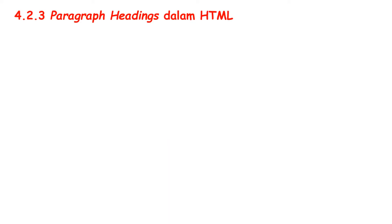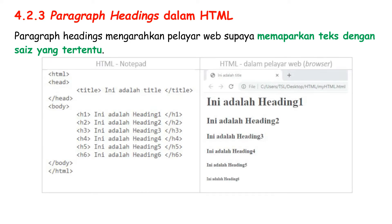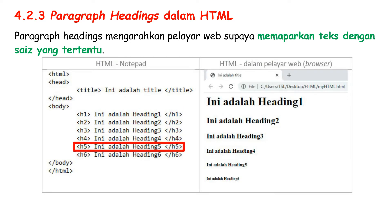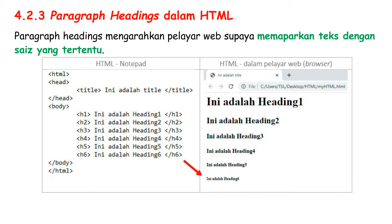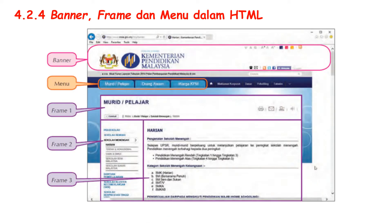Paragraph headings text is used to instruct the web browser to display heading text of a certain size. There are H1 to H6 tags, where H1 is the largest title, followed by H2, H3, H4, H5 and lastly H6. For Laman Sesawang, there are also Sepandok web, Bingkai and menu that are used to attract users to visit the Laman Sesawang.